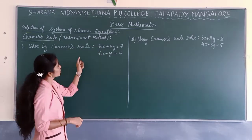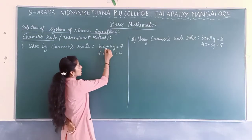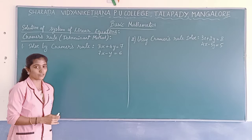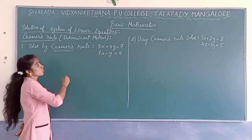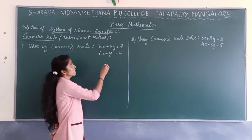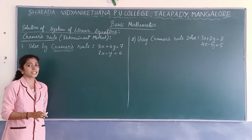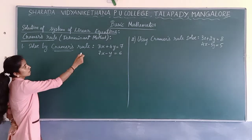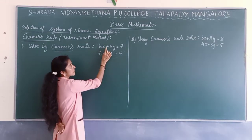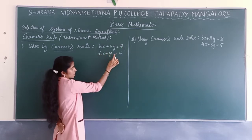Now let us move on to some problems with two variables. The equations are: 3x plus 4y equals 7, and 7x minus y equals 6. We have to solve using Cramer's rule specifically — do not use elimination or other methods. If Cramer's rule is mentioned, you must use it. This is a compulsory 2-mark question in the exam.